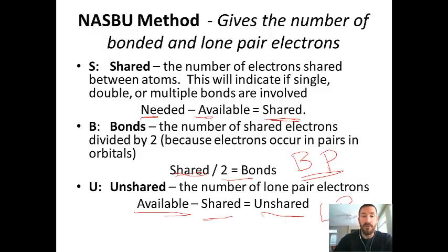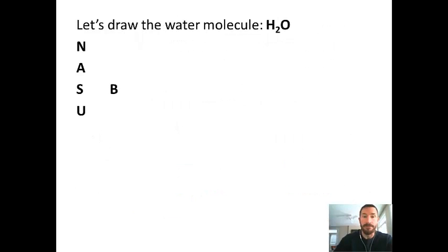So let's use this method and draw a couple of atoms, and then we'll be doing this during lab. So let's draw the water molecule. So what I'm going to do is just write first N, A, S, U, and then the B. N for needed, A for available, S for shared, B for bonds, and U for unshared. So let's go through each one. So let's draw the water molecule. Let's start with N. Now I already wrote down 12, but let me tell you where that came from. 12 is a number that you need. Now if you look at hydrogen, hydrogen only needs 2, but there's 2 hydrogens, so that would be 4. But we know oxygen is not hydrogen, so it needs 8. So 4 plus 8 gives us the number 12. So remember hydrogen needs 2, 2 times 2 is 4. Oxygen is not hydrogen, it needs 8, and so you add those together and you get 12.